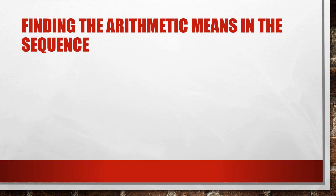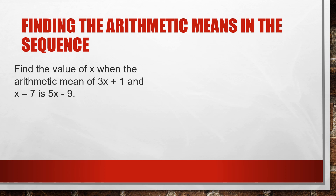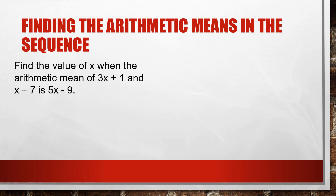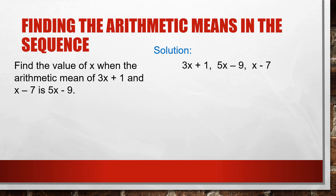Now let's proceed to another example. This is quite complicated, but actually very easy to solve. You are to find the value of x when the arithmetic mean of (3x + 1) and (x − 7) is equal to (5x − 9). First, we arrange this into a sequence: 3x + 1, then 5x − 9 as our mean, then x − 7.